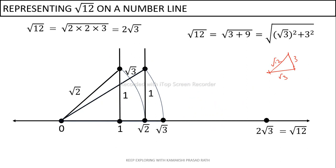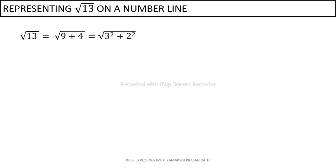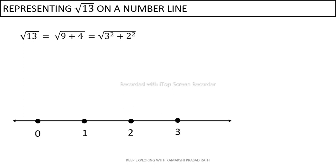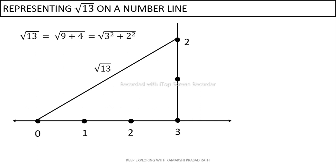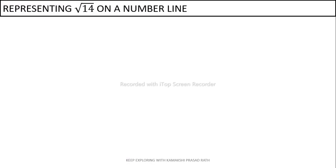Next, root 13. Root 13 can be directly written as the sum of two square numbers: 9 and 4, that is 3 squared plus 2 squared. So we take the base as 3 units, then using a protractor draw a perpendicular of 2 units. Since 3 is the base, 3 squared is 9; 2 is the perpendicular, so 2 squared is 4; and 9 plus 4 gives 13. The hypotenuse is root 13, which is plotted on the number line.